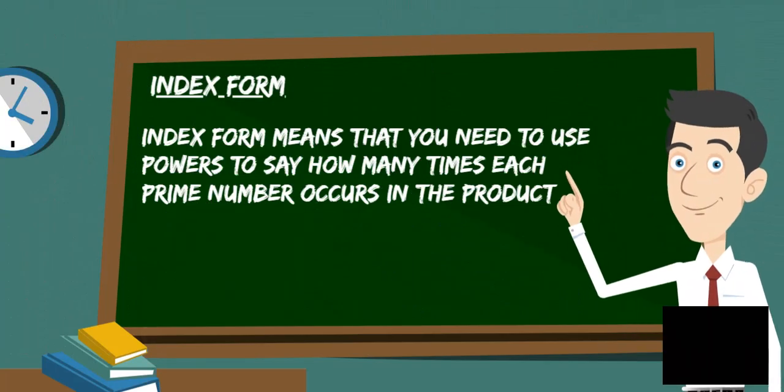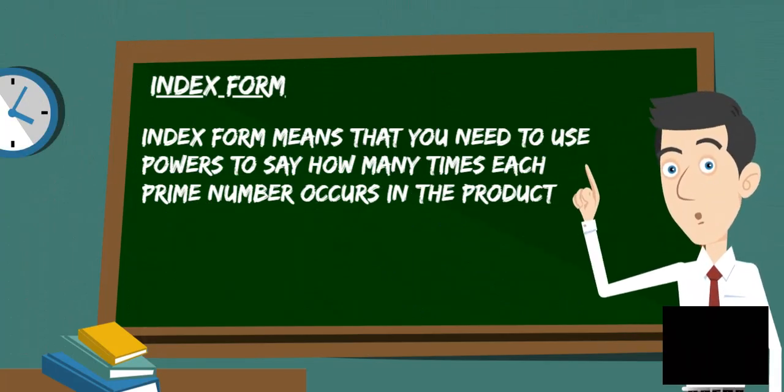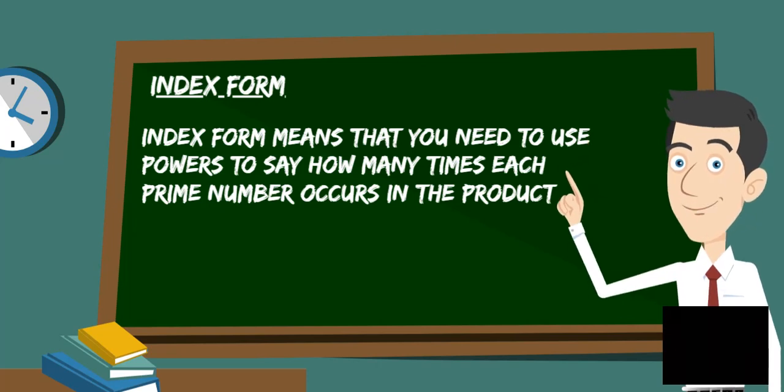Index means that you need to use powers to say how many times each prime number occurs in the product.